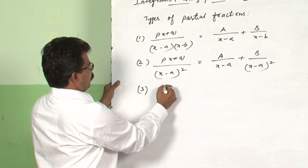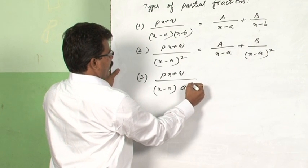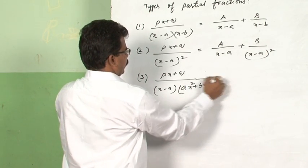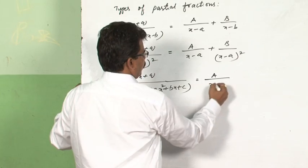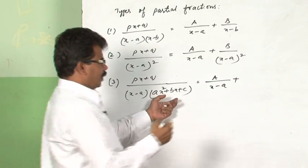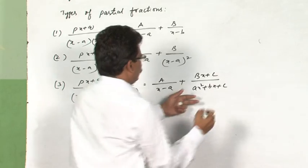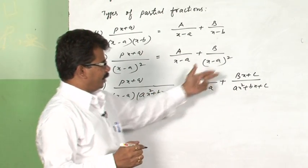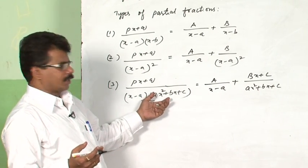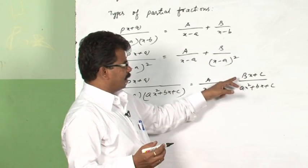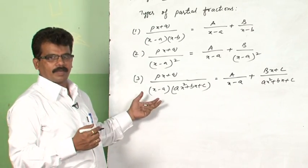The third type is (px + q) divided by (x − a) times a quadratic polynomial (x² + bx + c) which cannot be factorized. This integrand can be resolved into partial fractions as A/(x − a) plus (Bx + C)/(x² + bx + c). Since the quadratic cannot be factorized into linear factors, we write Bx + C in the numerator. These are the main three types of partial fractions.